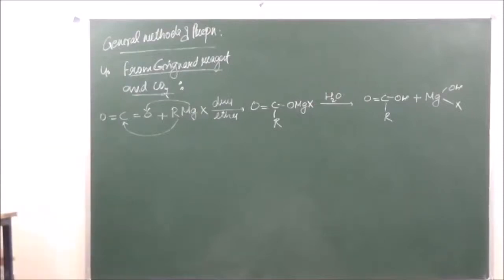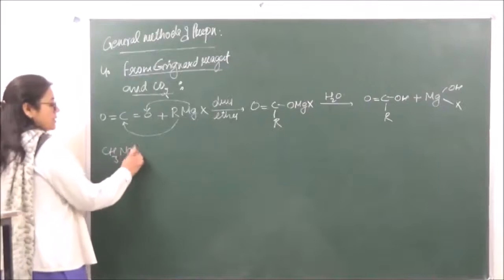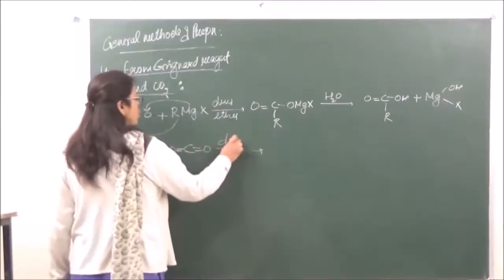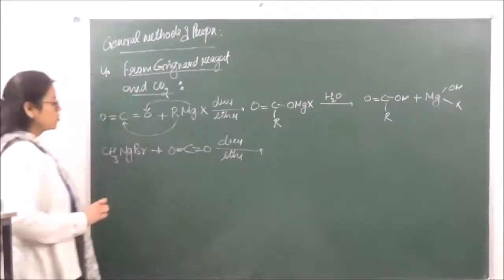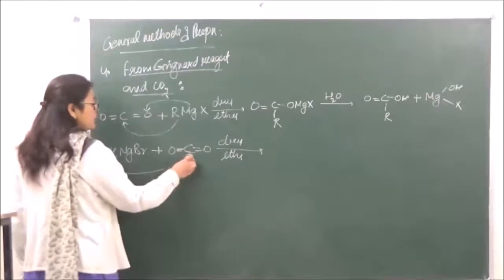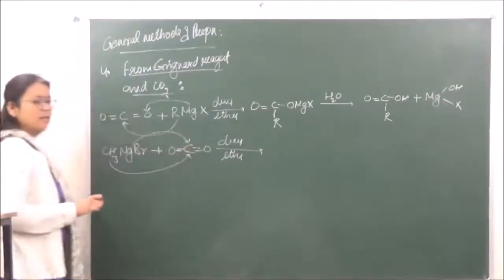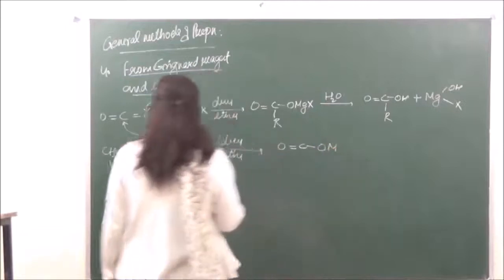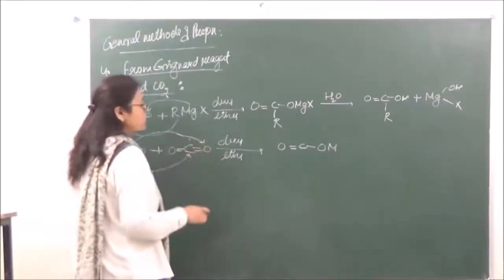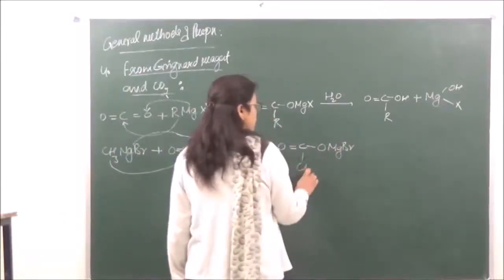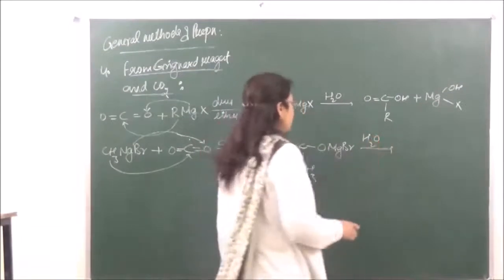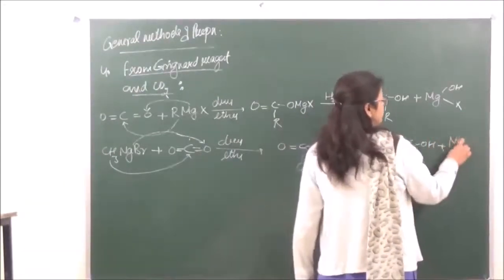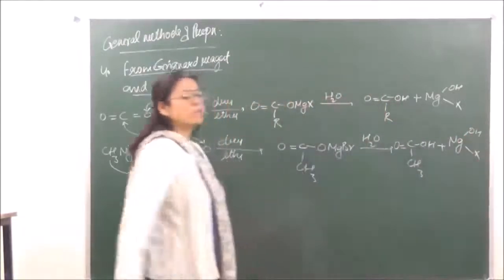Let's take an example. We are taking CH₃MgBr plus carbon dioxide in the presence of dry ether. CH₃ will attack at the carbon position and MgBr will attack at the oxygen, giving us an intermediate with C=O, O-MgBr, and CH₃. On hydrolysis, this gives us acetic acid (CH₃COOH) plus Mg(OH)X.